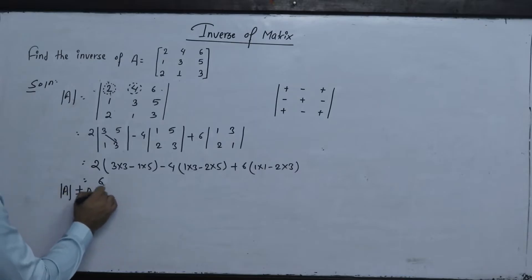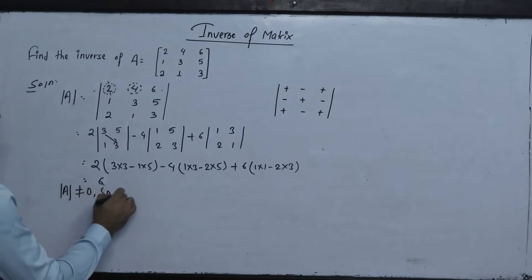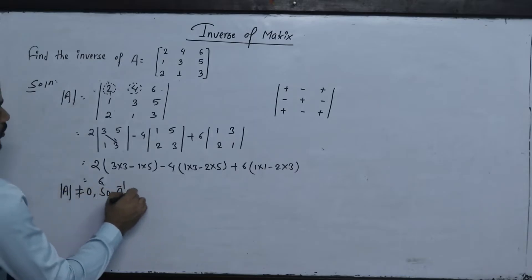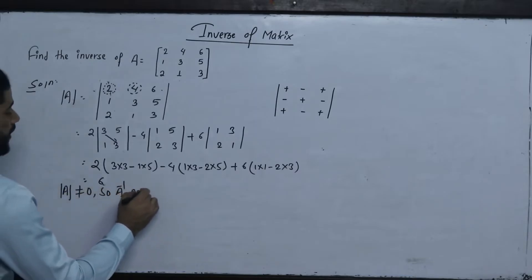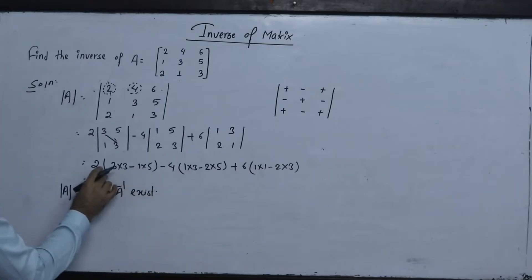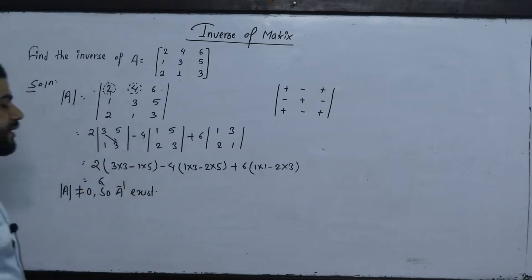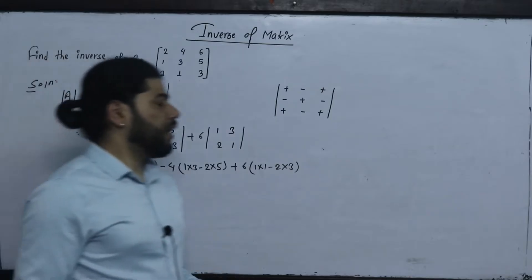So the determinant value is 6. Since the determinant is not zero, the inverse of A exists.